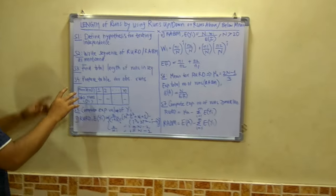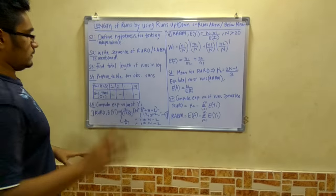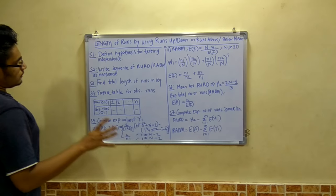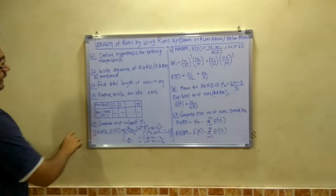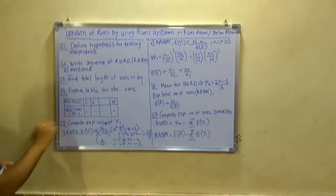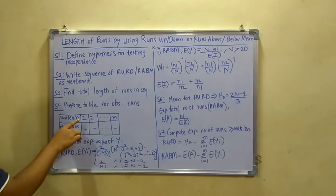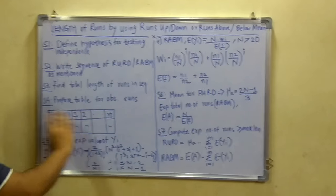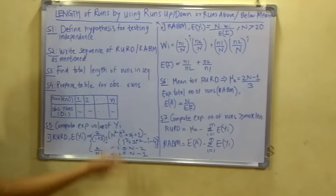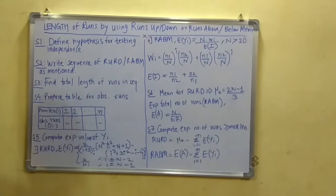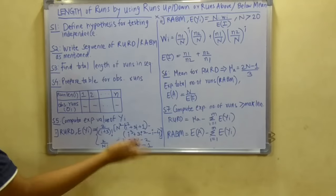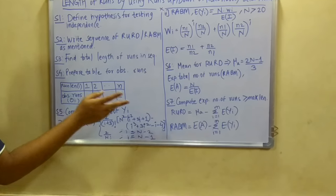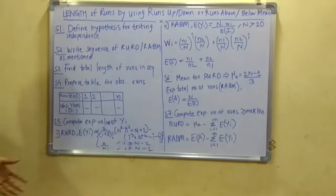Next you have to prepare this table for the observed number of runs. Now this observed number of runs will contain 2 rows: the run length i as well as the observed runs oi. This run length i will start from 1 and go up till n. The value of n could be anything - n could be 4 means it will run 1, 2, 3, 4, or it could be 3 or 5, and your observed runs can also vary.